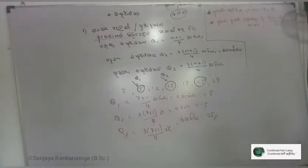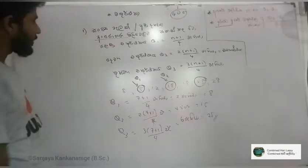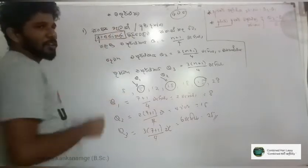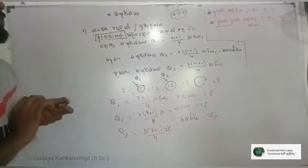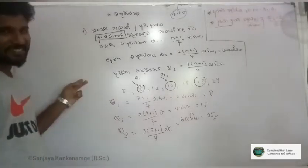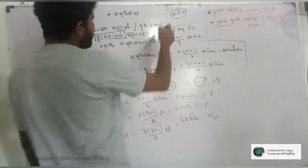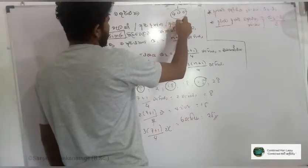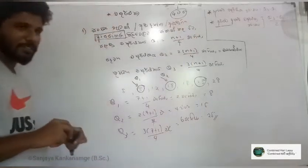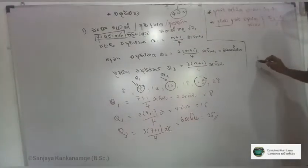Q3 is equal to Q1. If you look at each other, you will be able to ask each other. If you look at the same level of Q3, the same level of Q3 is equal to Q3. If you look at each other, you will be able to ask each other. It is equal to Q3. The same level of Q3 is equal to Q3.